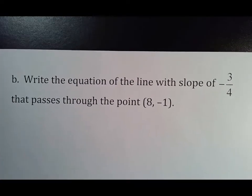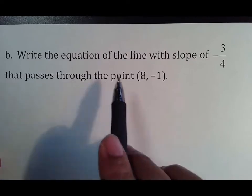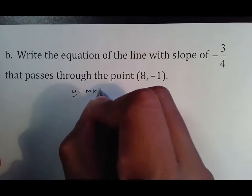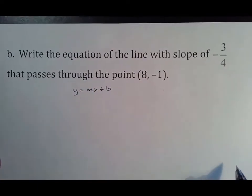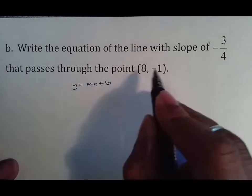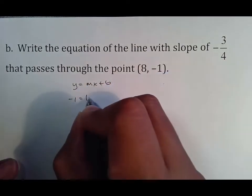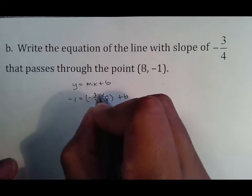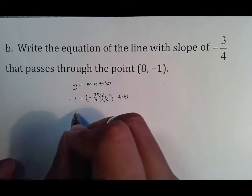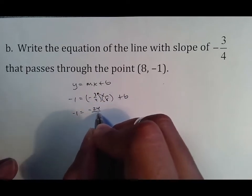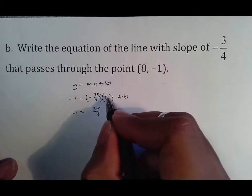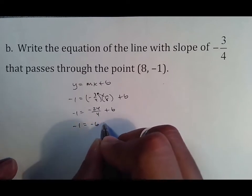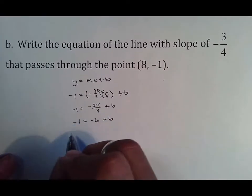Write the equation of a line with slope of negative three-fourths that passes through (8, −1). Again, put y = mx + b. These are the easy ones — they get more difficult later. y is −1, m is −3/4, x is 8, plus b. Multiplying: negative 3/4 times 8 gives −24/4, which is −6.